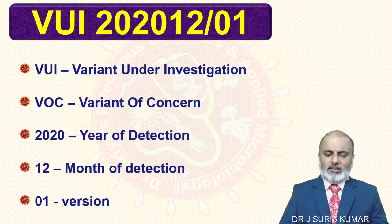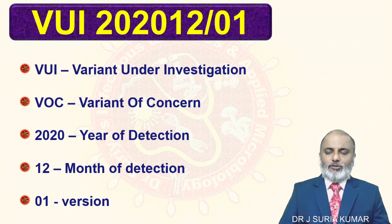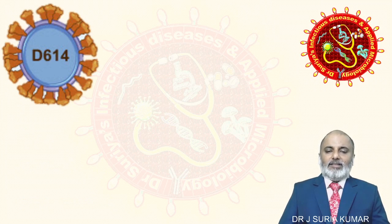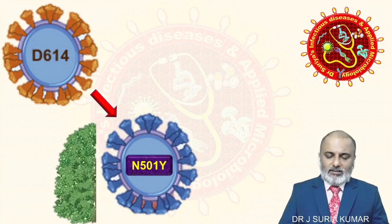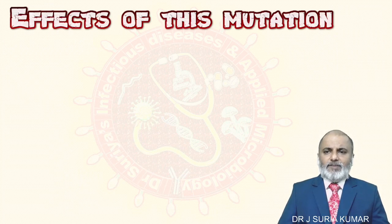Don't think the mutation happened only in the spike protein — almost 17 places have mutations. But the most notorious is the spike protein mutation. Previously it was D614G; now the key mutation is N501Y. Whether it is a benefit or harm — just four points will conclude this.